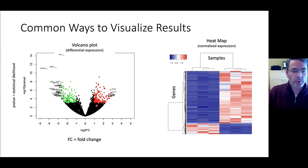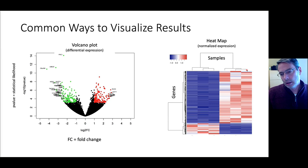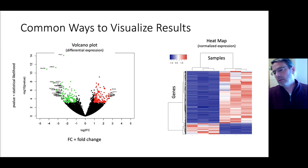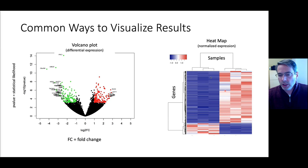The volcano plot groups things that are highly expressed and upregulated versus downregulated between your samples. The heat map has each row as a gene and each column as a sample, so you can see a large group of genes that are downregulated and another group that are upregulated. The heat map is a way to visually cluster similarity among samples or among genes — it would be interesting to ask what is the function of the group of genes downregulated in these samples versus upregulated in those, then investigate the function of those gene clusters.